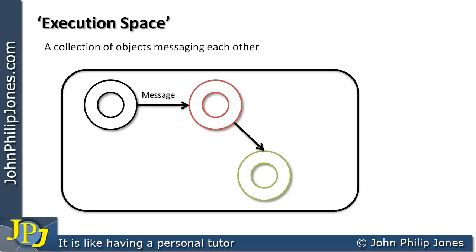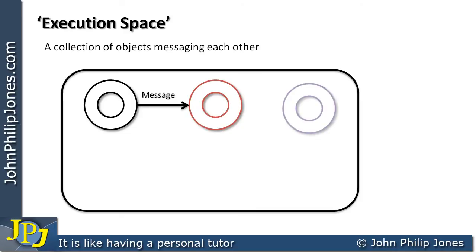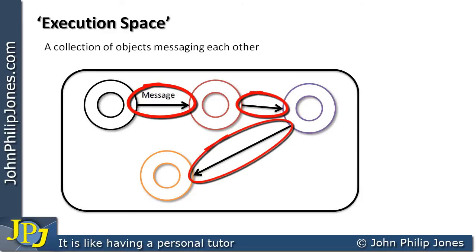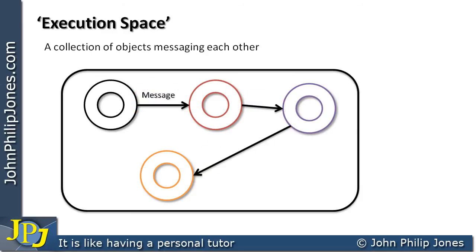At this point, the green object has served its purpose. The red object no longer needs it — it's calculated the deductions — so that object gets disposed of. We might then see the need to produce another object, and this object might be sent a message from the red object, and the purple object in turn might request another object and send a message to it. What we really can see here is that this execution space gets populated by objects that send messages to each other, and when objects are not needed, they are effectively disposed of.